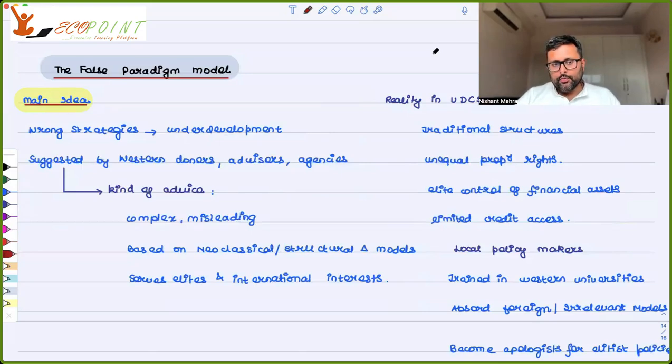The false paradigm model. What is false paradigm model telling you? It is telling you that there is underdevelopment in the underdeveloped countries because of the wrong strategies which are followed by these countries.